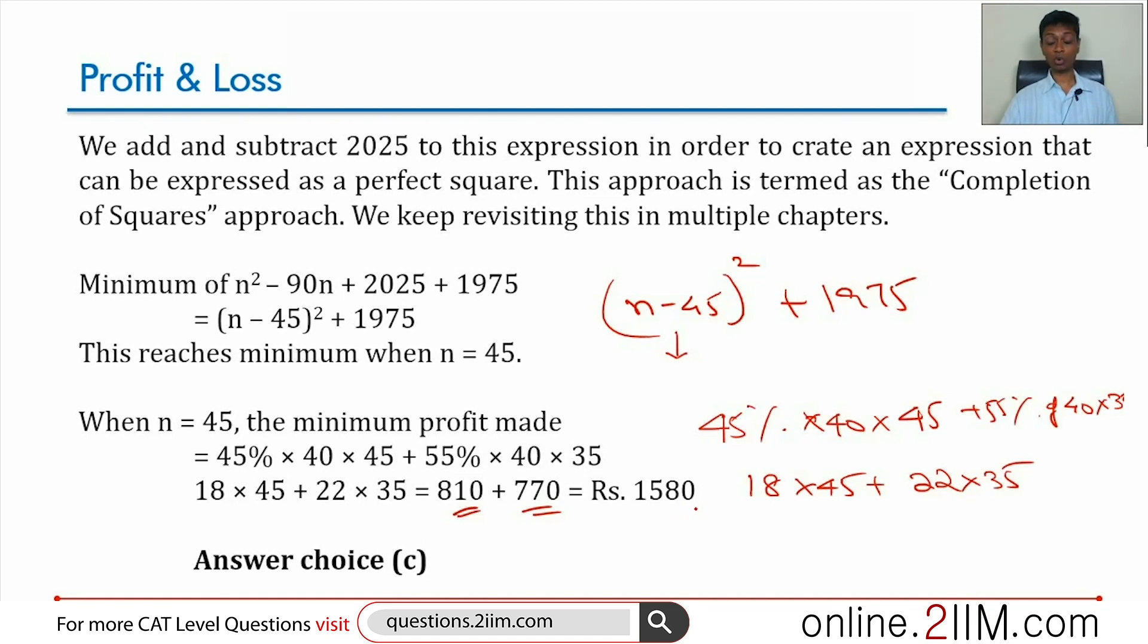This part is just plugging in 45 and simplifying. The entire idea behind this question is to go from that quadratic expression to this form. Any quadratic can be broken as a square term plus or minus an adjusting term. We need to stay on top of this because it can appear in any number of topics.